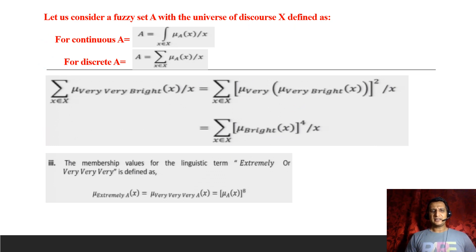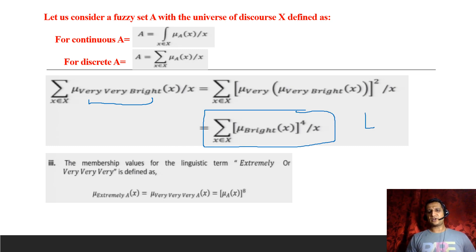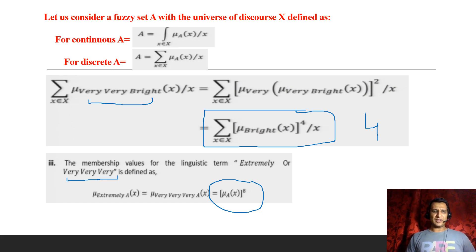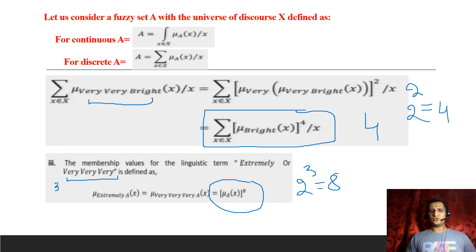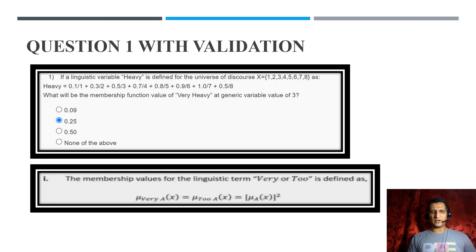When the term 'very very bright' is given — meaning 'very' is used twice — we have to multiply the membership value four times (2 raised to the power 2 = 4). When 'very' is used three times, we multiply it eight times (2 raised to the power 3 = 8). Each 'very' represents a power of two. This is the fundamental concept applied from questions 1 to 8.